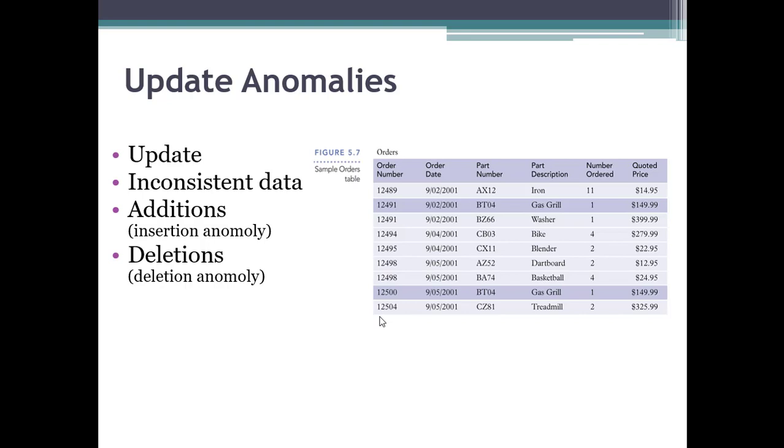Here's a deletion anomaly. Some record's going to be deleted. Which one? Let's go ahead and delete this record. Do I have data now about the bike? If I delete this order, I've now deleted data about the bike. And that is the deletion anomaly.